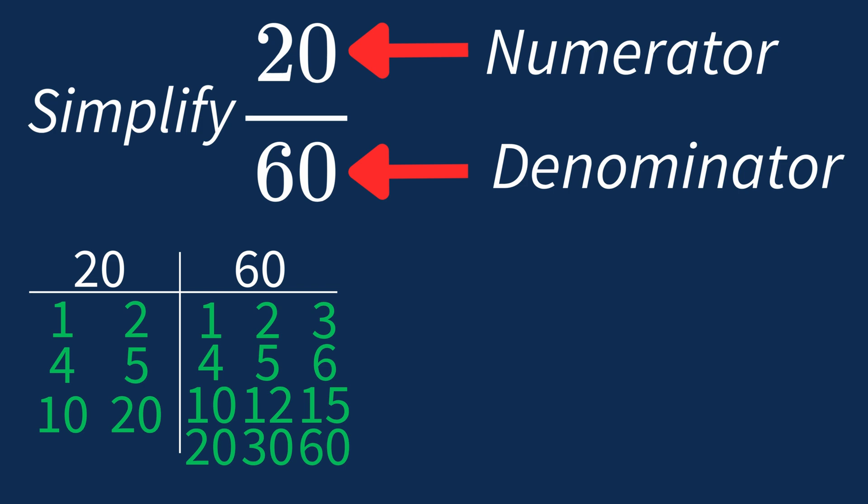So the largest common factor between 20 and 60 is 20. This means we can divide both the numerator and denominator by 20 to simplify the fraction.